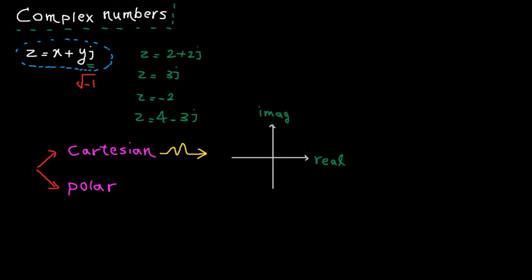For example, here the real part is 2 and imaginary part is 2. Here is another example: the real part is 0 and the imaginary part is 3.